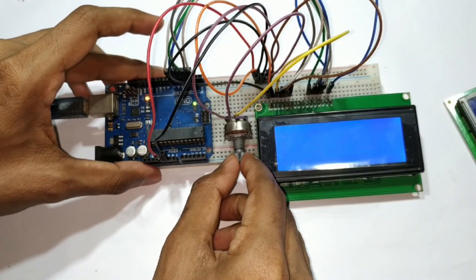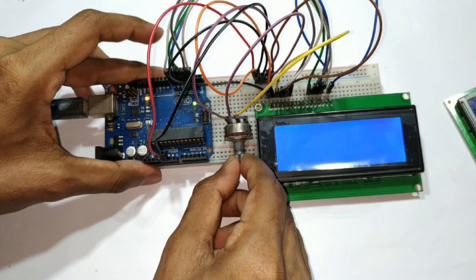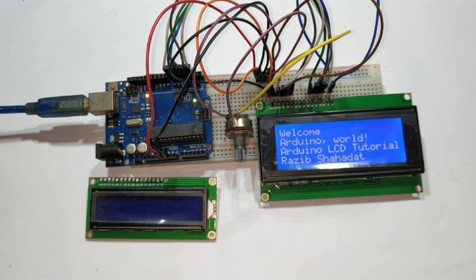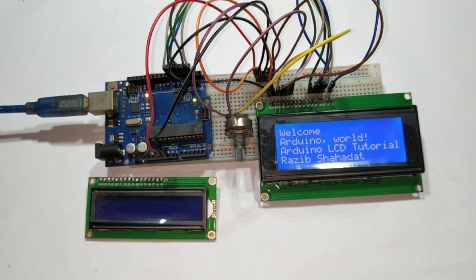After uploading the code, need to adjust the LCD contrast using variable resistor. Now, everything is fine. Thank you for watching my video.